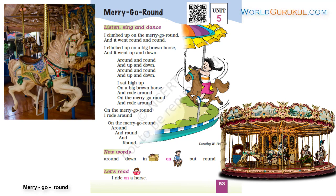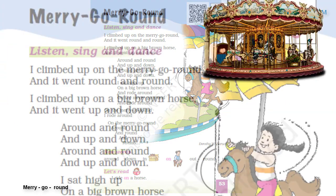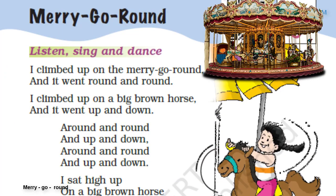Okay, let us sing and dance. This is the Marigold song. I climbed up on the merry-go-round and it went round and round. I climbed up on a big brown horse and it went up and down.